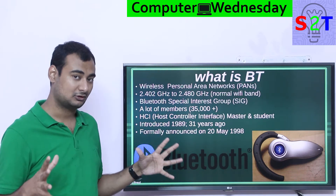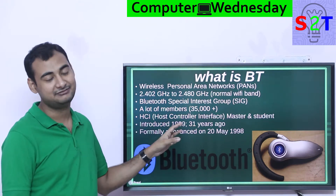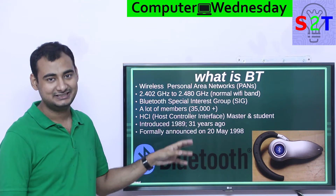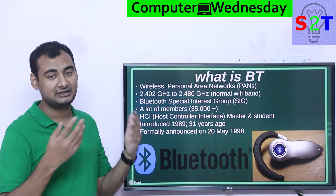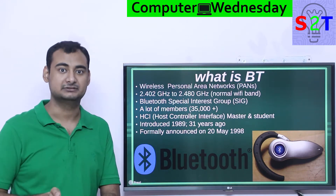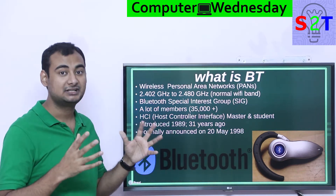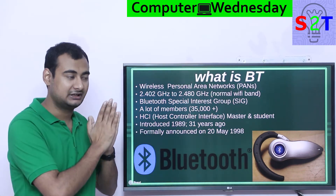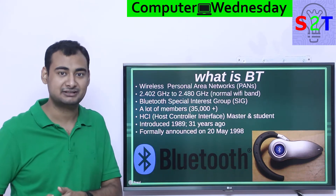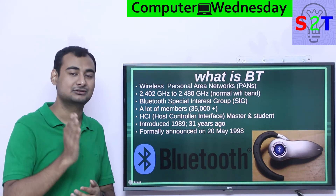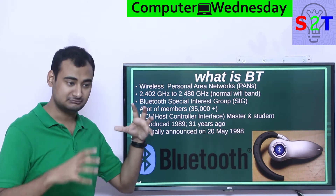Bluetooth SIG is a huge organization — over 35,000 companies support it. Every company that wants to certify Bluetooth has to work with them, and because of that, Bluetooth works universally. You can buy Bluetooth headphones from any manufacturer, even a no-name brand, and it will work with any phone that says Bluetooth — all because of this giant corporation managing the rules, regulations, and spec sheets.